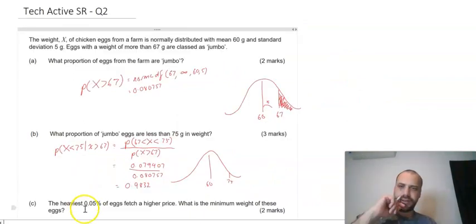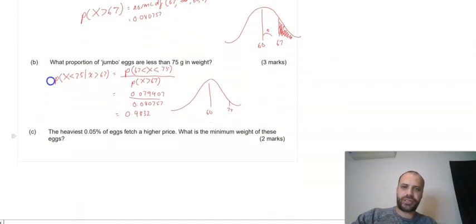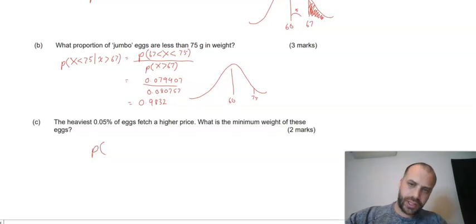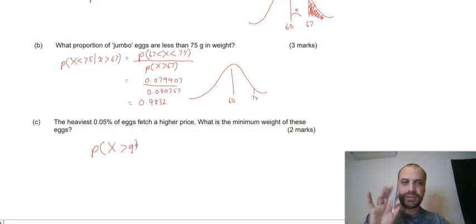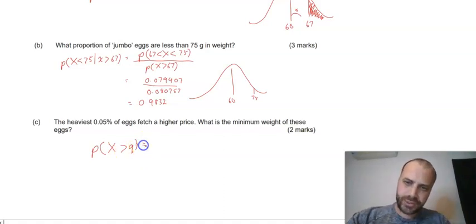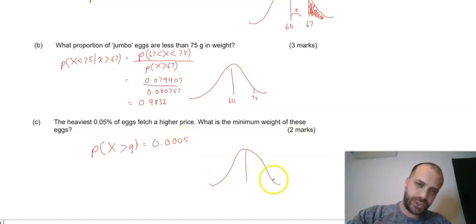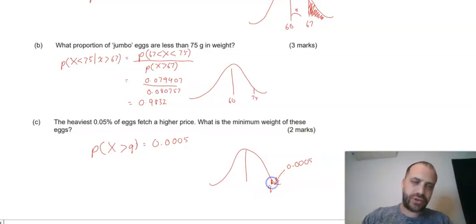And we've got one more part of this question. The heaviest 0.05% of eggs fetch a higher price. What is the minimum weight of these eggs? So the probability that the variable x is greater than some value, let's call it q. Now we need to be a little bit careful here. The probability that x is greater than q is equal to, a lot of us are going to want to put 0.05 here, but it's got a little percent there. So it's not 0.05, it's 0.0005. If we convert that to a percent, move that decimal place over, that's where we're at.